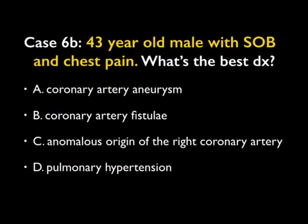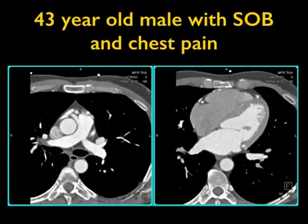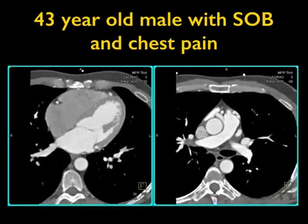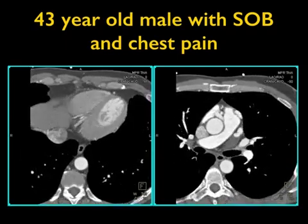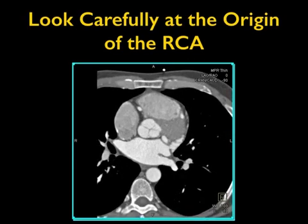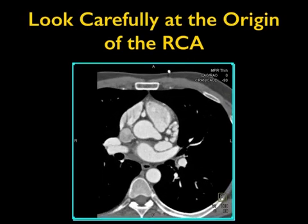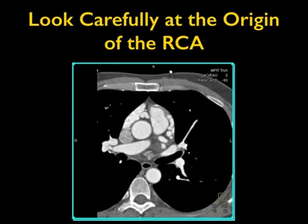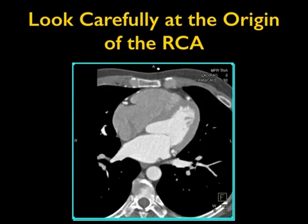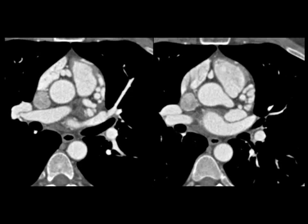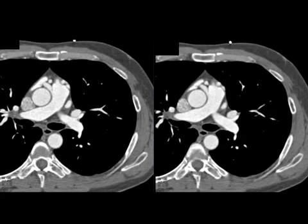Another case: a patient with chest pain. What's the best diagnosis? Looking at the images, scrolling through carefully — note a vessel anteriorly coming off the pulmonary artery. Also notice the tortuosity and size of the patient's LAD. There you see the right coronary artery coming in, but it's not going into the right cusp — it's going into the pulmonary artery. There are a number of collaterals present, particularly near the course of the LAD, visible on axial images.